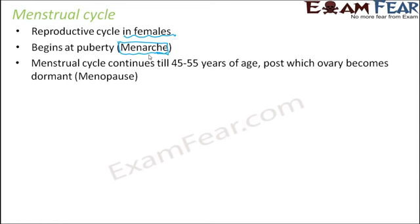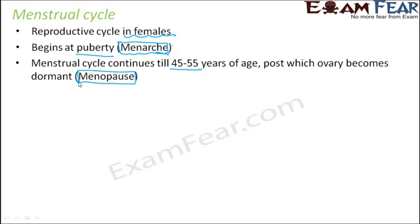The menstrual cycle does not continue throughout a lifetime. It continues only till 45 to 55 years of age, after which the ovary becomes dormant and is not functional anymore. So any female will remain in the reproductive phase from puberty till 45 to 55 years of age. When the menstrual cycle stops, the ovary does not produce eggs anymore, so reproduction cannot take place. Menopause is the name given to the last menstrual cycle, after which there is no further menstrual cycle.